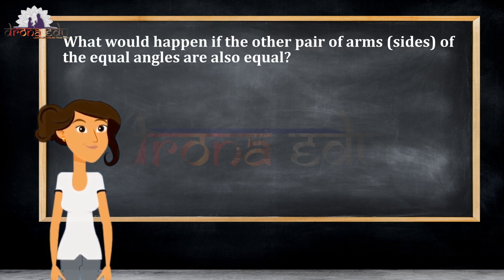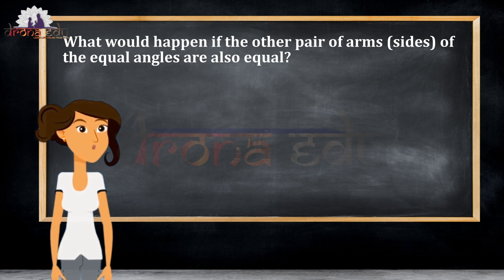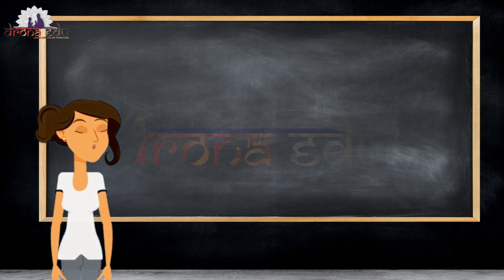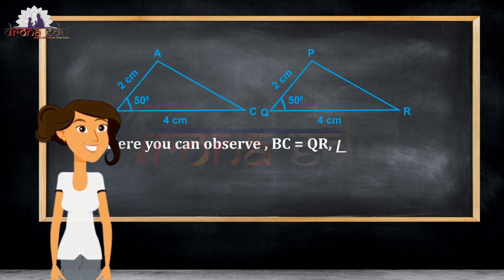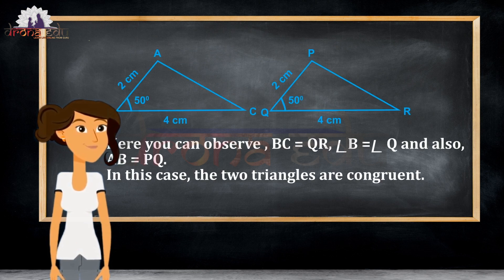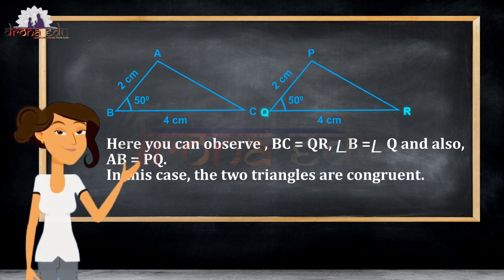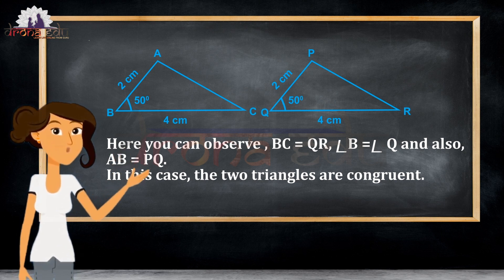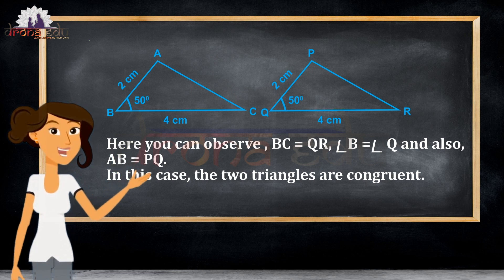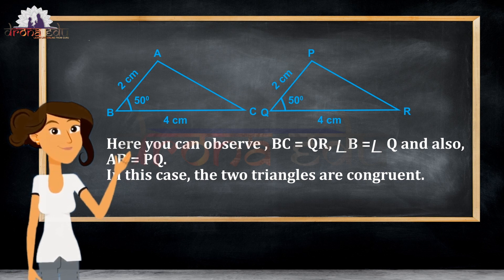Now, what would happen if the other pair of sides of the equal angles are also equal? Let's see. Observe this triangle: triangle ABC and triangle PQR. Here, AB equals PQ and BC equals QR, and both triangles have the same angle. So, angle B equals angle Q.